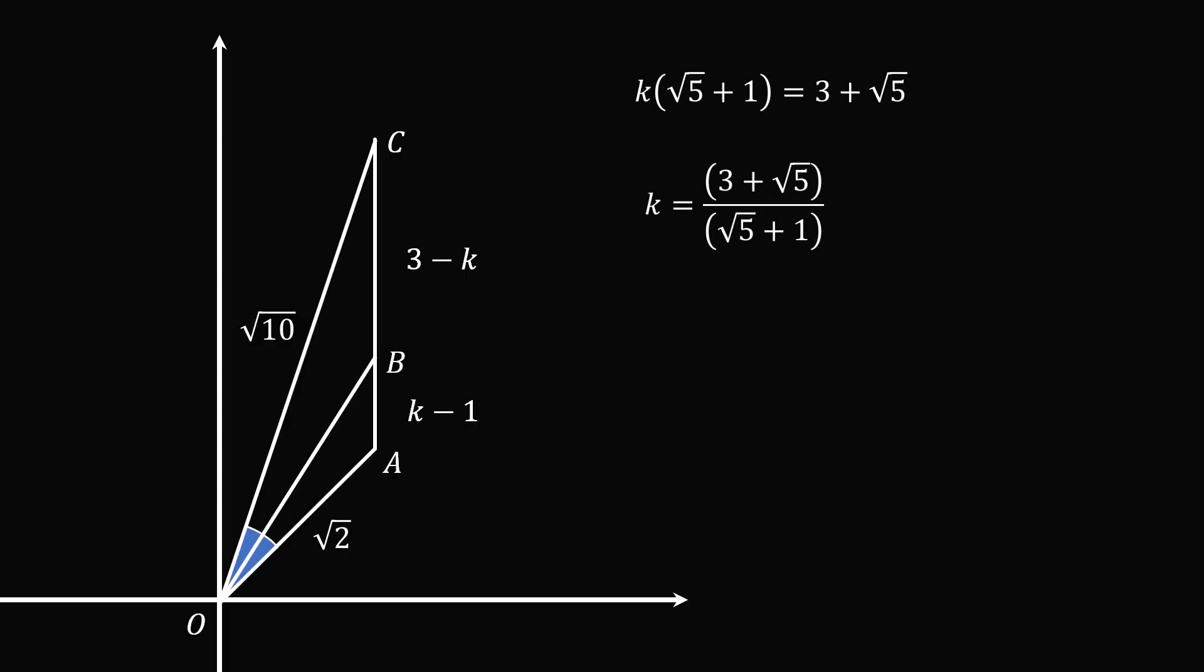Just for fun, we will rationalize this denominator by multiplying the numerator and denominator by the square root of 5 minus 1. We'll simplify this equation, and we get that k is equal to 1 plus the square root of 5 all over 2, and that's approximately equal to 1.618, which is equal to the golden ratio. What a golden answer!